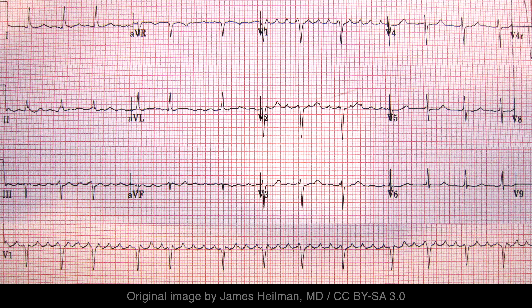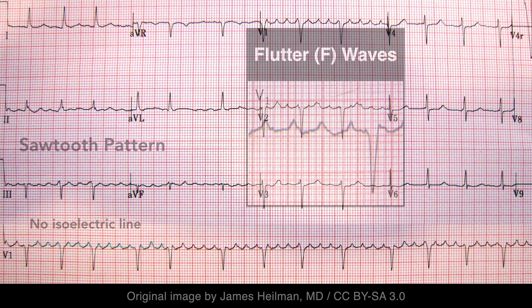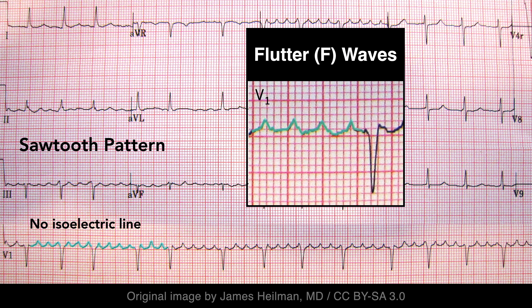Atrial flutter is a macro re-entrant dysrhythmia characterized by rapid flutter waves with a sawtooth appearance. The ectopic atrial depolarizations are called flutter waves — they are not P waves. These flutter waves are usually best visualized in the inferior leads, where they have a V shape. In this case, the flutter waves are best visualized in V1, where they are positive deflections. The absence of an isoelectric line between the atrial flutter waves results in a sawtooth appearance.